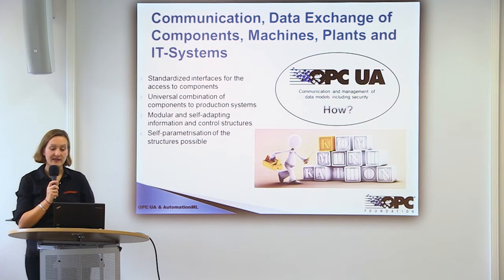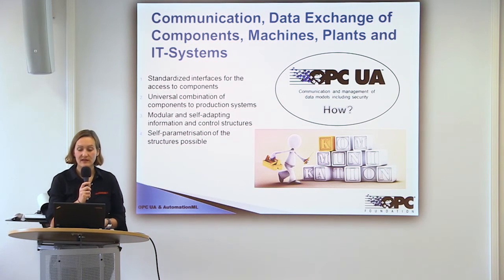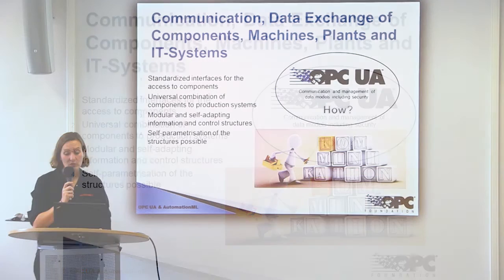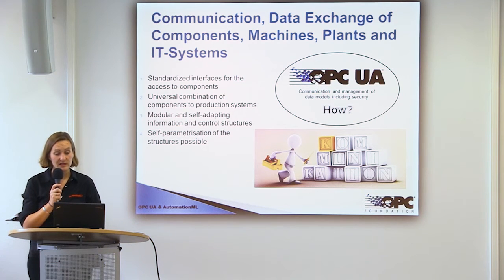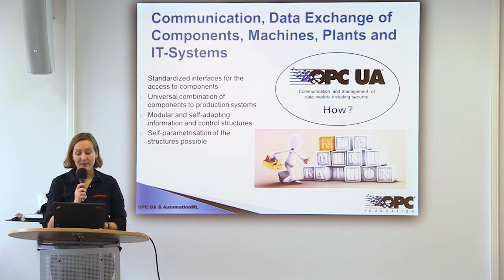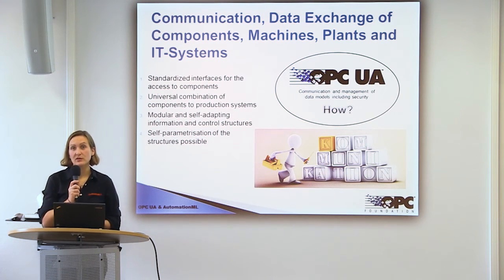On the other hand, we have the data exchange of the components and must define how we exchange information between components of a production system over different automation layers and also over different locations. Therefore, we have standardized interfaces for access to components by OPC UA. We have the possibility to combine components from different vendors within one production system, and we have the possibility to have self-adapting information and control structures based on the information model included in OPC UA.